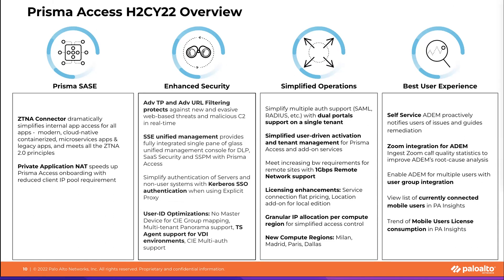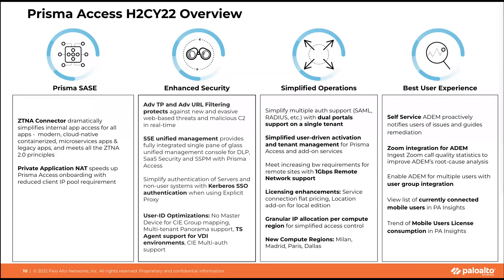The next Prisma SASE feature is Private Application NAT, which helps reduce your client IP pool requirements by leveraging RFC 6598 space for accessing private applications, even when using RFC 1918 in your data center. In enhanced security, Advanced URL Filtering and Advanced DNS Security protect against evasive web threats and malicious command-and-control in real time using MLAI technologies, via cloud-delivered security services integrated with Prisma Access. We also provided DLP and SSPM innovations, all managed through the SSC unified management dashboard.